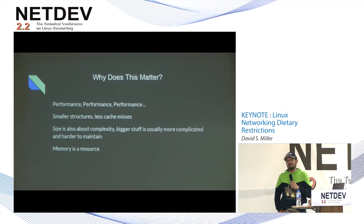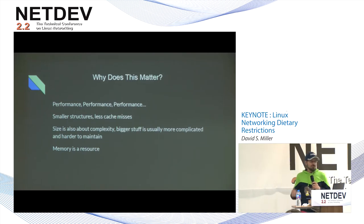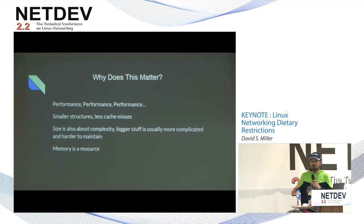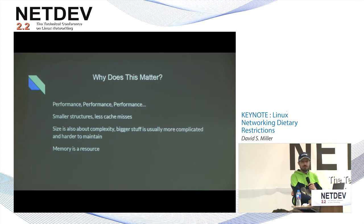So why does this matter? Performance is the dictating factor for a lot of these decisions. As I mentioned with sk_buff, minor modifications to these data structures have enormous performance implications for everyone. Smaller data structures mean fewer cache misses — something almost all of us who work on the kernel understand. Size is also about complexity: bigger things are harder to understand and maintain. And memory is a scarce resource even on large systems, because on large systems you're handling large numbers of connections, routes, and packets in flight. Making things smaller is great for everyone.